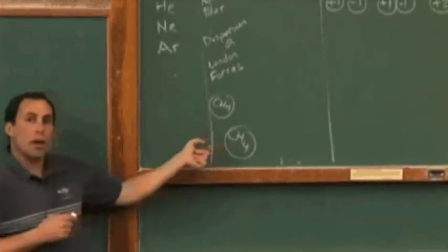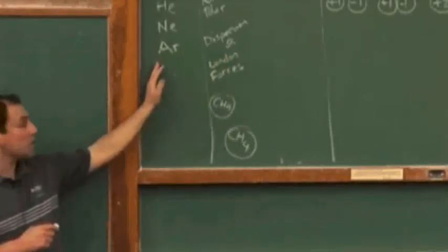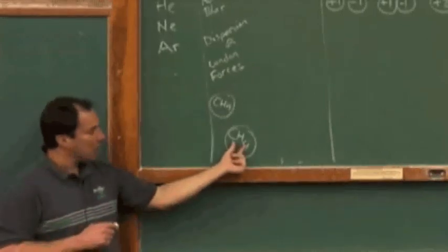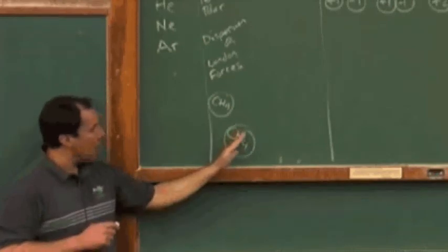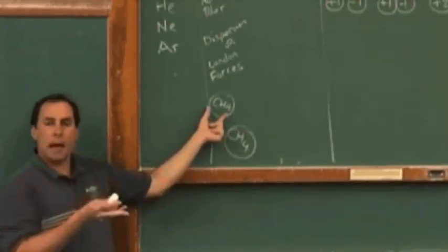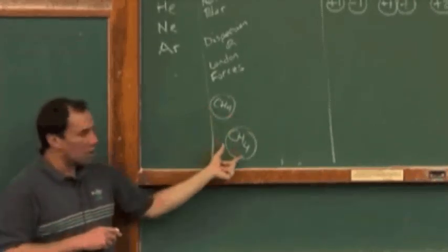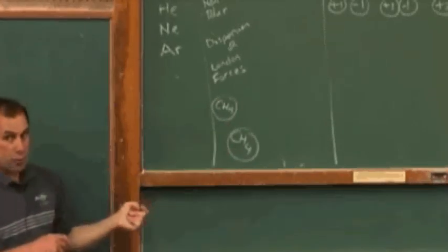This dispersion or London force that's present here or in just the inert gases is said to come about because we have a distribution of electrons. This molecule has electrons whether localized or delocalized, and at any given moment the electrons are not perfectly balanced, so this will be offset at one moment, this will be offset at one moment, we can have a slight attractive force. It's extremely weak.